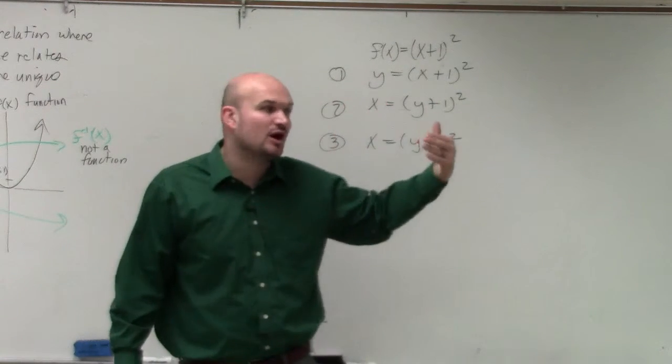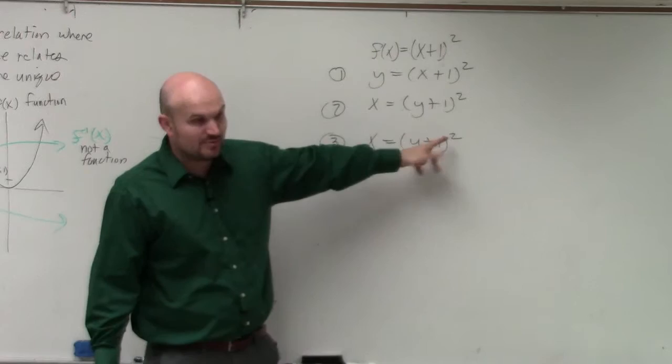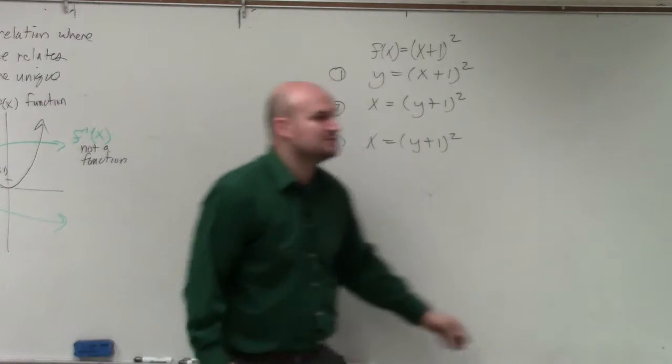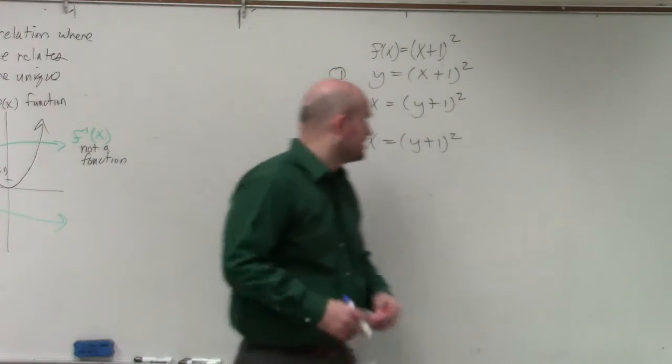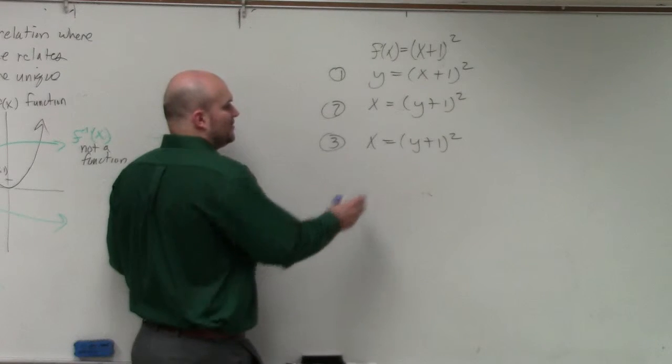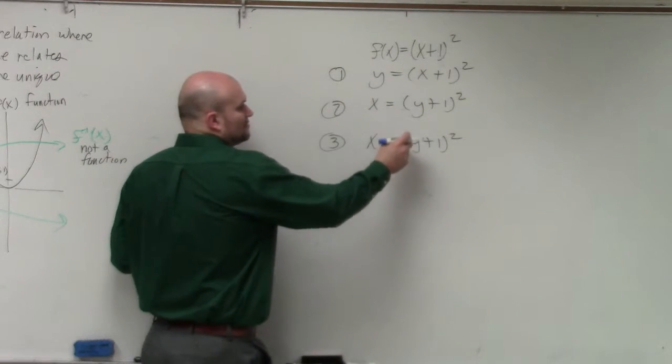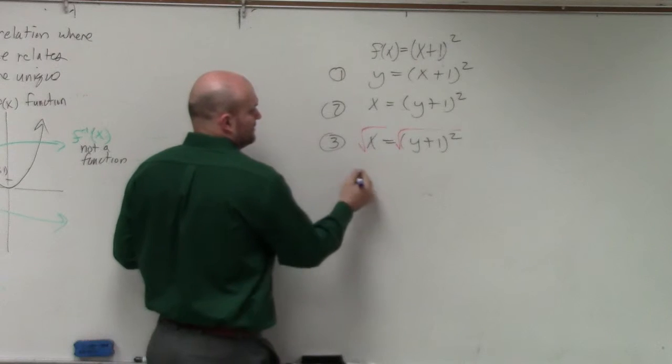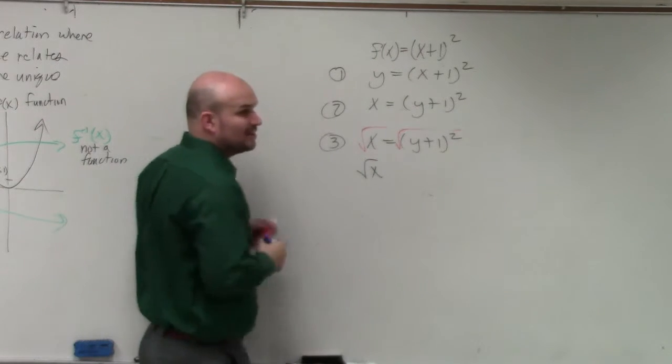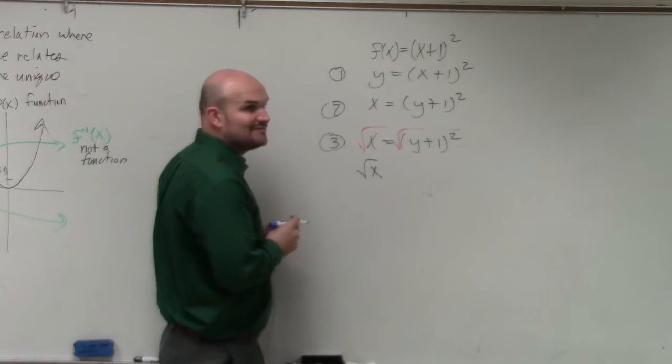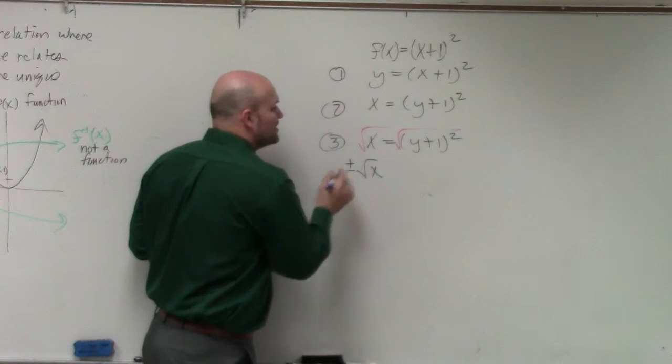So what we want to do is undo our exponents first, which in this case would be our power of two. So how do we undo raising our expression to the second power? We now have to take the square root, or you could raise it to the one-half power. So now you have the square root. Please remember though, when you introduce the square root, you have to include plus or minus.